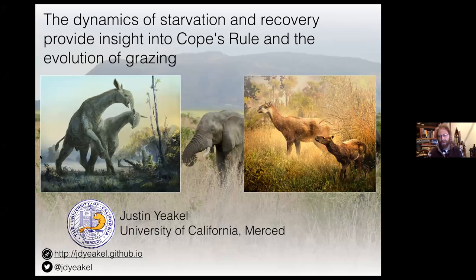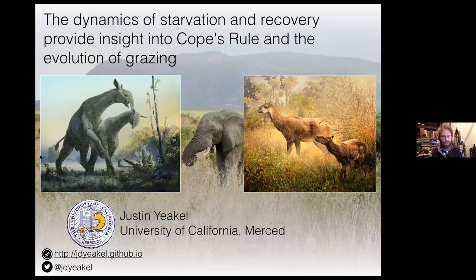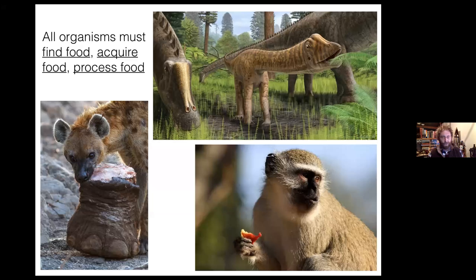What I want to do is look at the dynamics of starvation and recovery and think of these processes from an allometric perspective as a function of body size. I want to make the argument that the timescale of these processes really structures a lot of the constraints that terrestrial mammals experience. I'm isolating my thought processes towards mammals and more specifically terrestrial mammals.